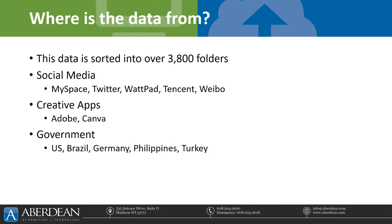Where the data is actually coming from is all sorts of different places. Again, it's cataloged into those 3,800 different folders, each referencing a different data breach. A lot of these records are from social media, with over 2 billion records from Weibo and Tencent, which are Chinese messaging applications. However, MySpace, Twitter, and Wattpad all have around 270 million records leaked each. Twitter was actually the highest of those with 360 million records being leaked.